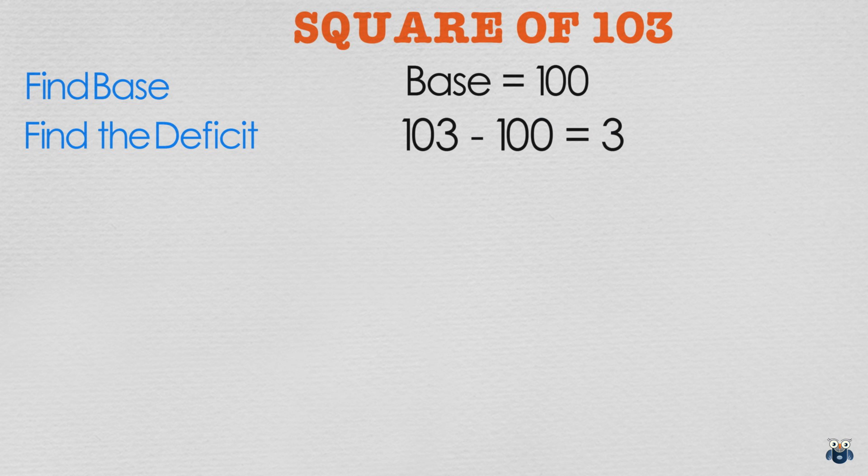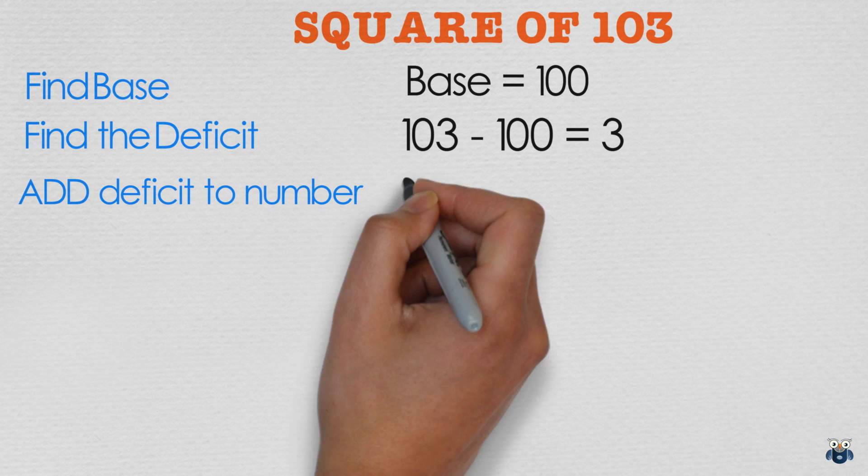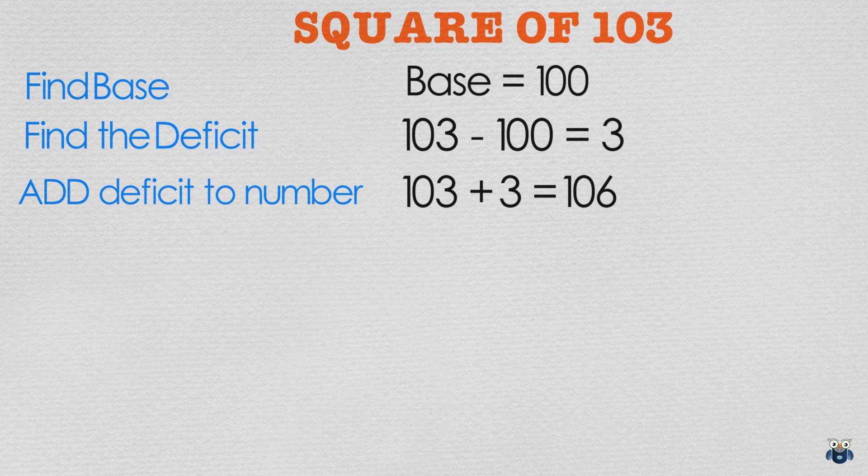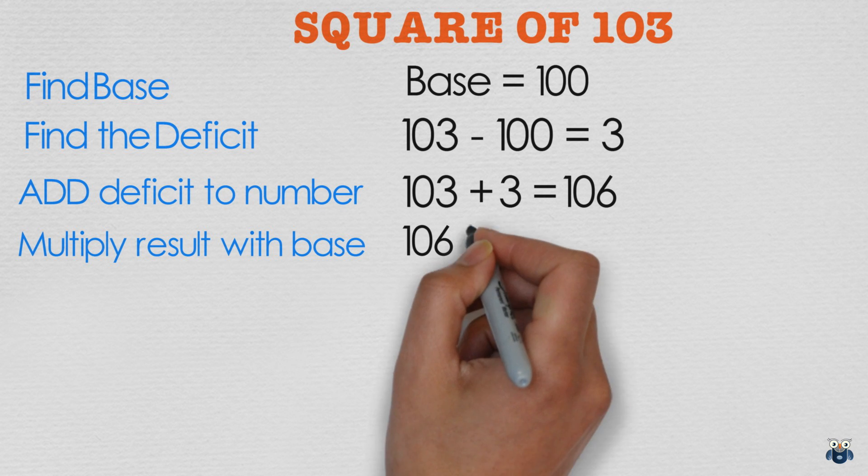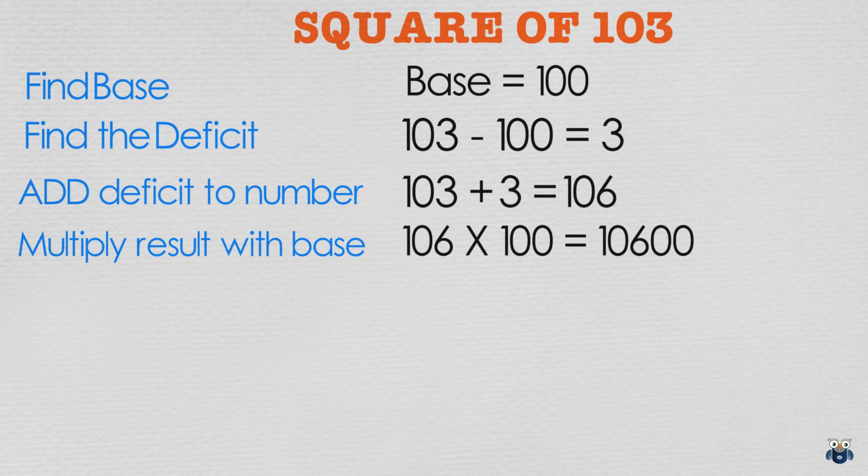Now since 103 is more than the base, we add the deficit to it. Please make a note of this. So 103 plus 3 is 106. We then multiply this result with our base. 106 times 100 is 10600.